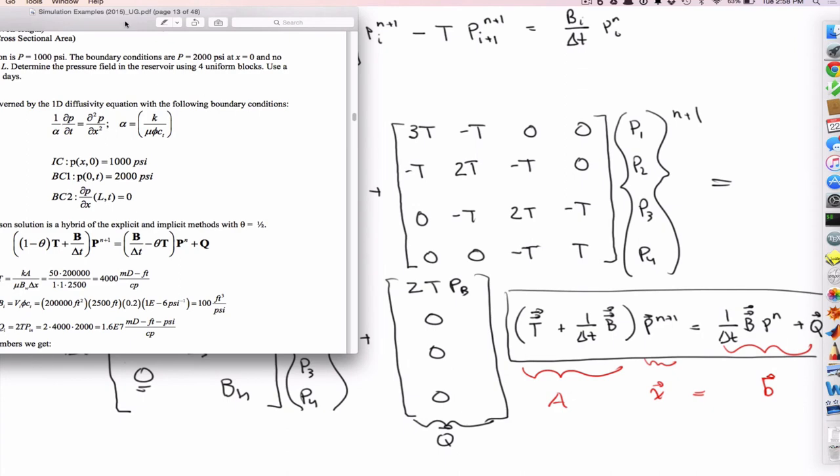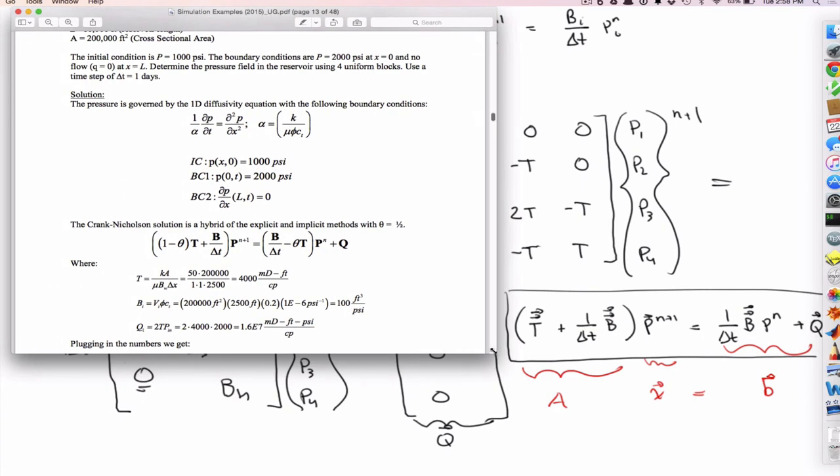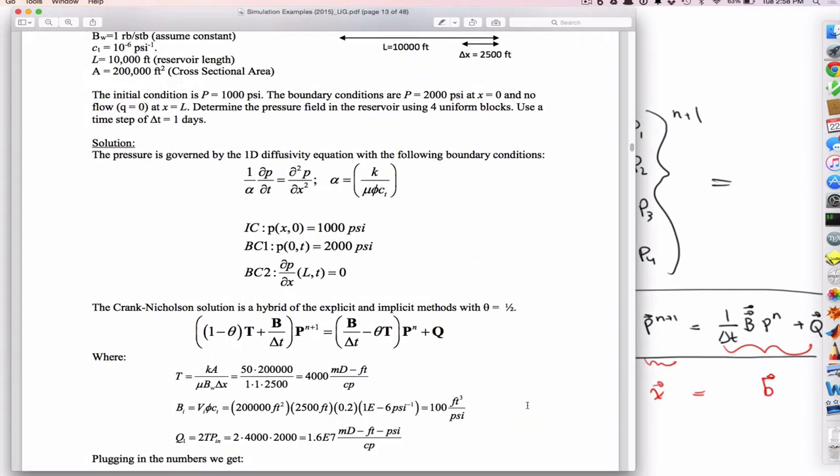Is Q equal to zero, or is it just fixed? It's equal to zero. No flow. That... According to that structure, for that four-block grid.